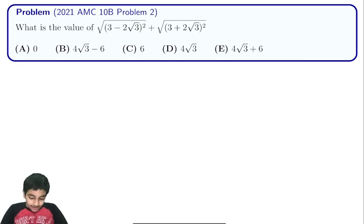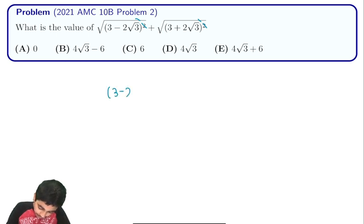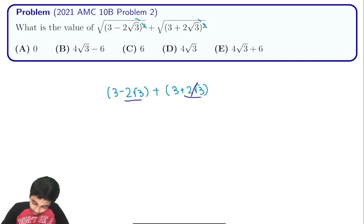So the obvious solution might just be, okay, we're getting the square root of the square of a number, so we cancel them out. We're left with 3 minus 2√3 plus 3 plus 2√3. And then we see that 2√3 minus 2√3 is 0, so these cancel, we're left with 6. And this was the incorrect answer that many people put.